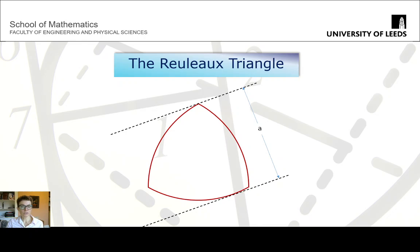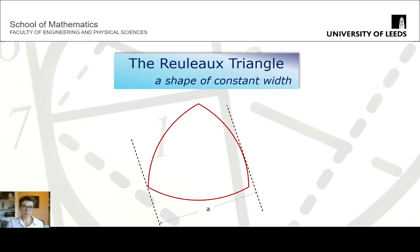If you now measure the width of this shape at any angle all around, its width is always a, the radius of that circle that we used. So it is what is called a shape of constant width, it has the same width all the way around. And obviously it is not a circle, we can see that.